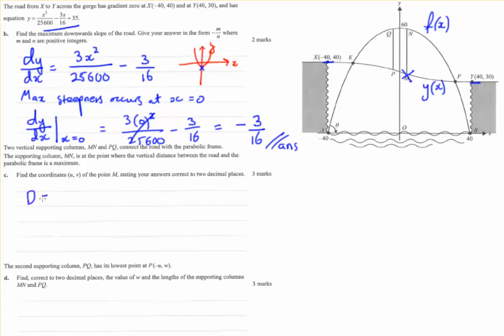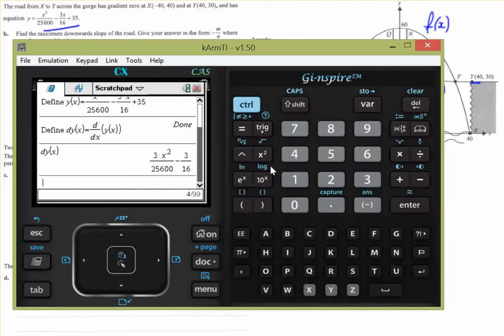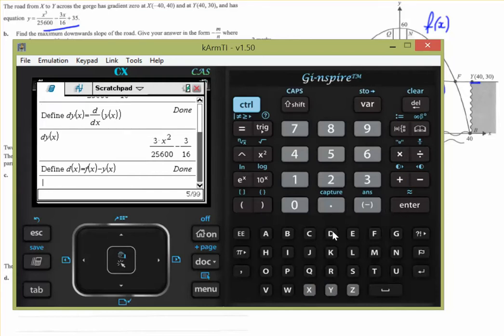So let's call that D. So the distance between the two is f of x minus y of x. And because we've defined these on our CAS, it makes it much easier to state that distance function. So let's do that. So let's define, menu 1, 1, let's define D of x as equaling f of x minus y of x. Great, that's already done for us.